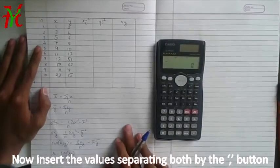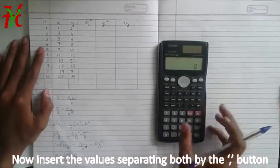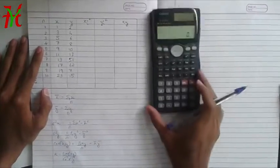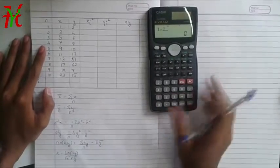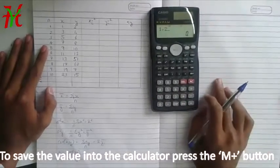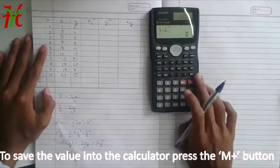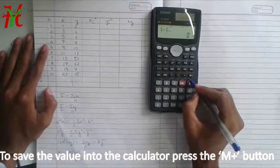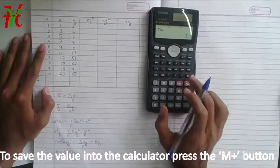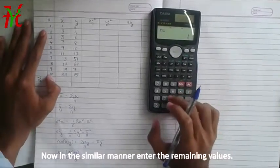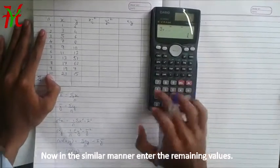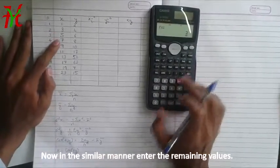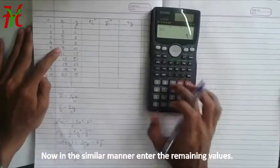Now to insert the values X and Y, you need to insert both the values simultaneously separating by the comma. Now 1 comma 2, and to save the value in the calculator press this M plus button. You can see that DT here written stands for the data. You can see N is equal to 1. Now the 2nd value comma 3 comma 4 DT, 5 comma 6, 7 comma 8, 9 comma 10.